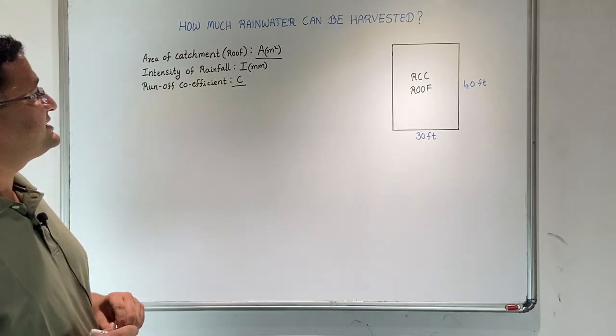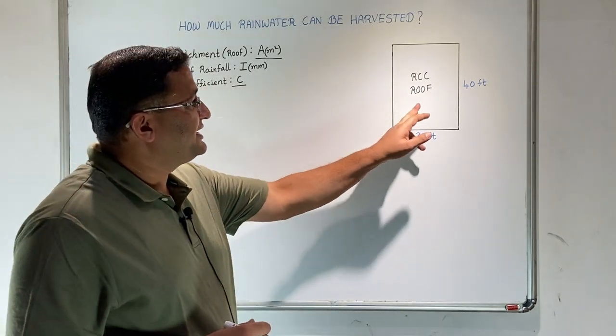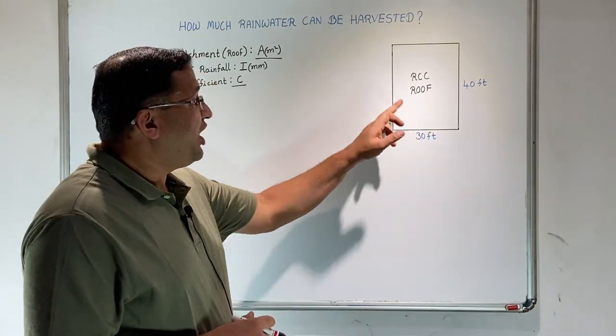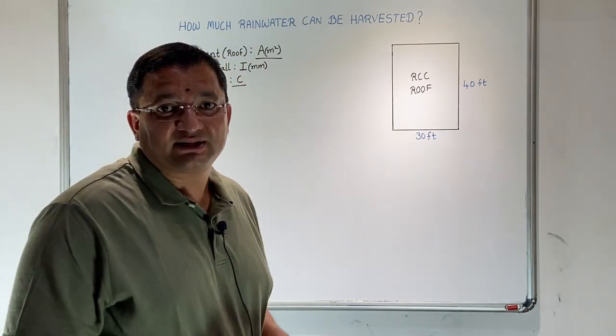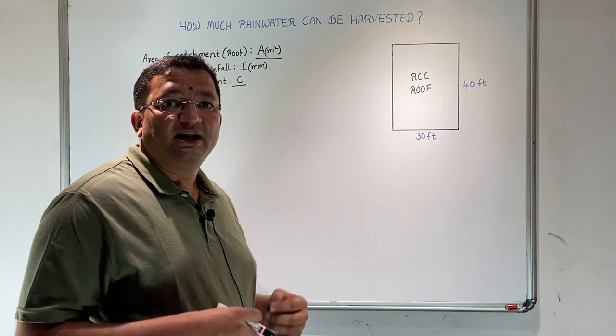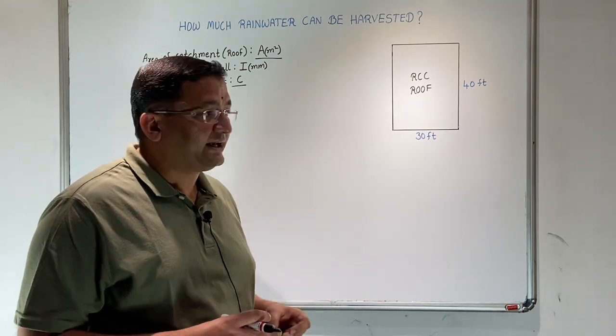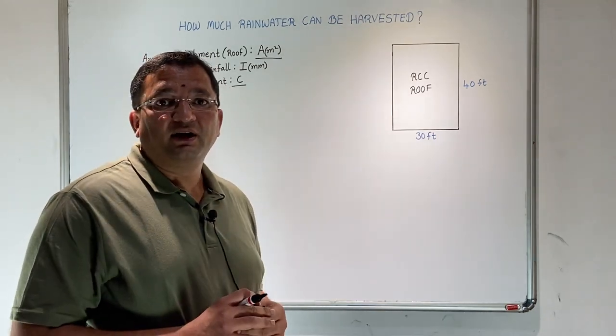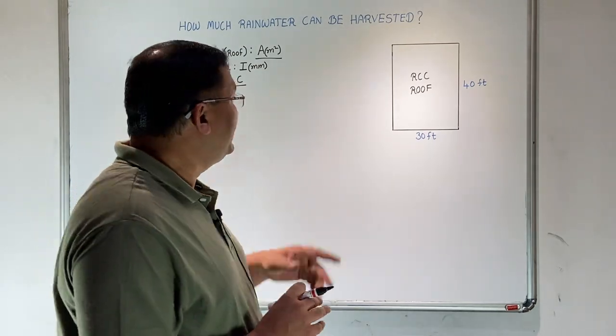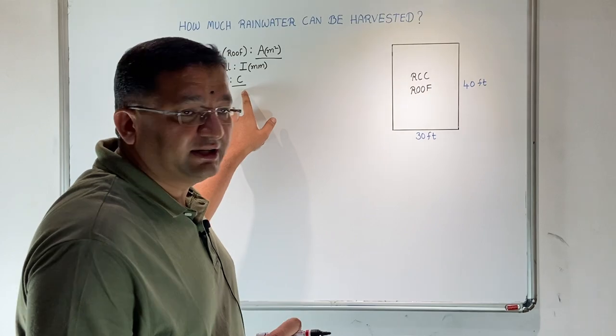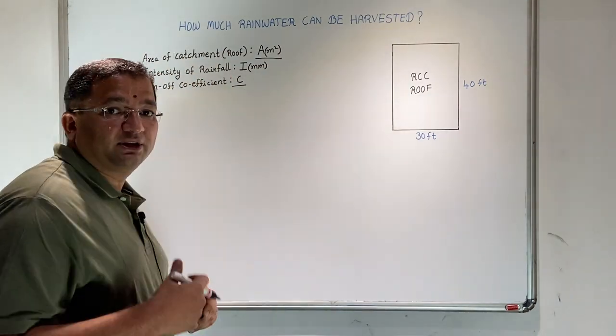The runoff coefficient is, say if 100 liters of water falls on the surface, how much can actually be collected. There will be many losses when water falls on the catchment like seepage, leakage, first rain separation, and other losses. We have to factor in a coefficient to account for these losses.